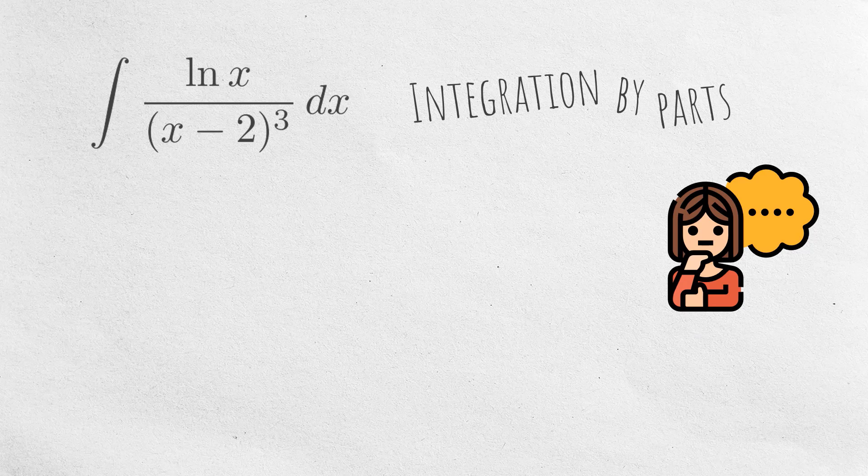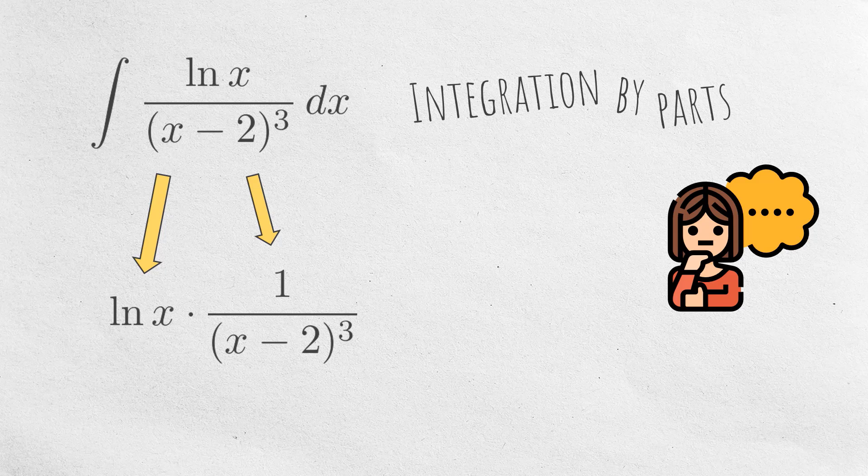Hello everyone, today we are going to compute this integral using integration by parts. It's not something that we usually see because it's a product of a log function and a rational function. So, how do we choose u and how do we choose dv? Let's find out.